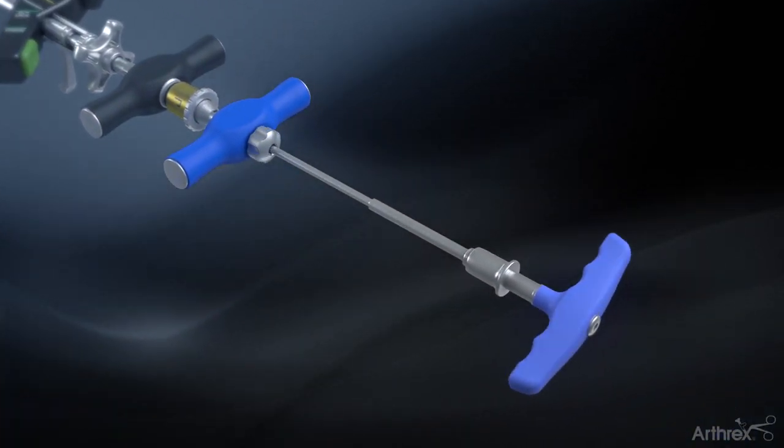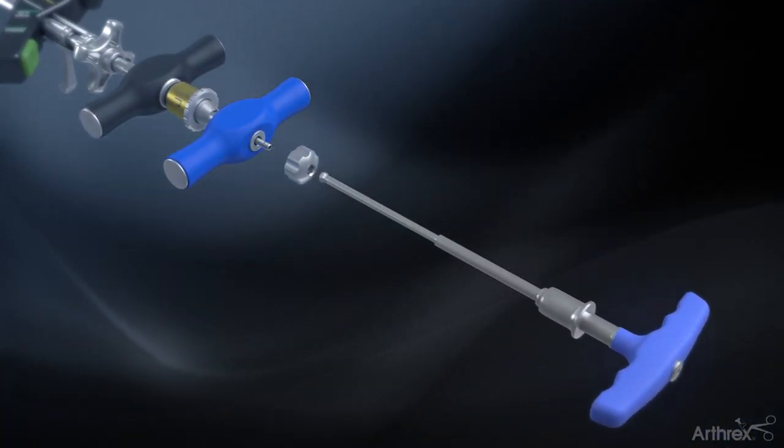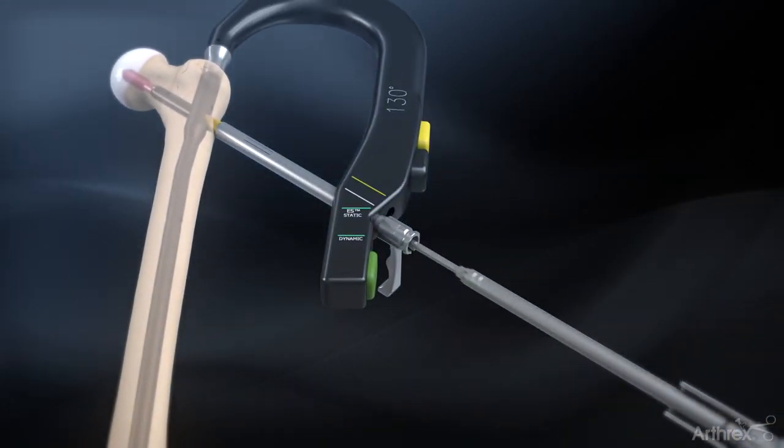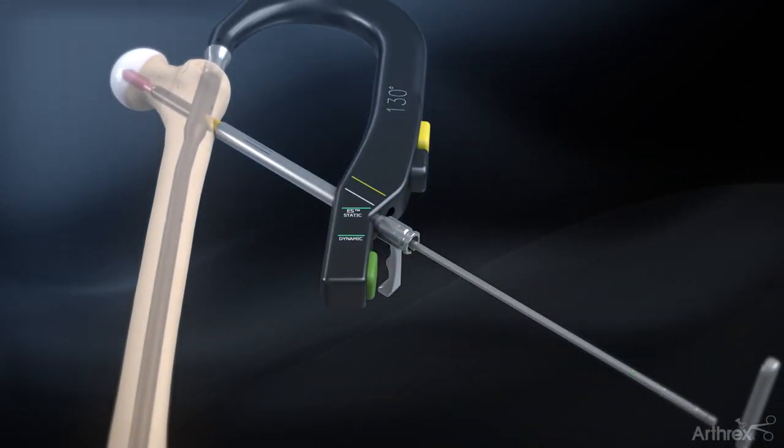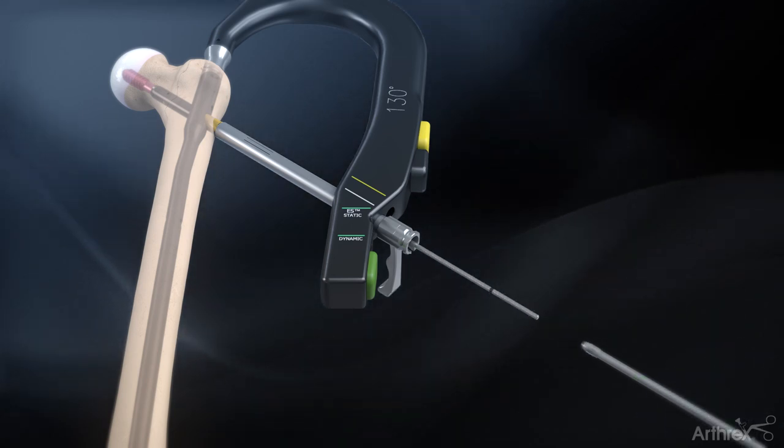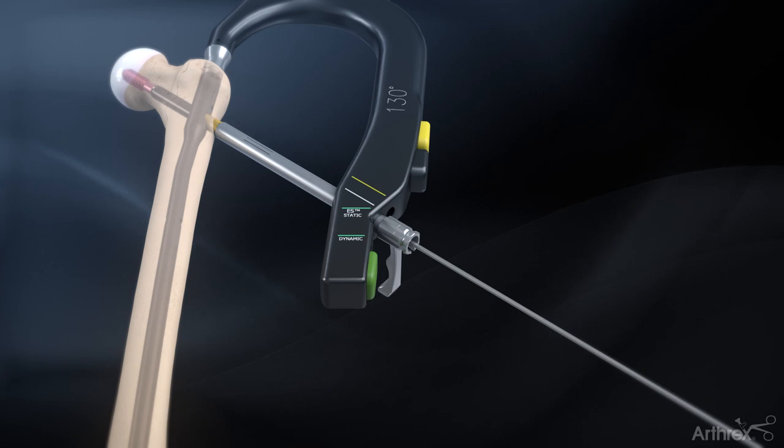Remove the lag screw capturing rod nut by hand or with the ball hex driver. Pull out the lag screw inserter assembly and unscrew the lag screw capturing rod by hand or with the removal tool. The lag screw guide pin is also removed.